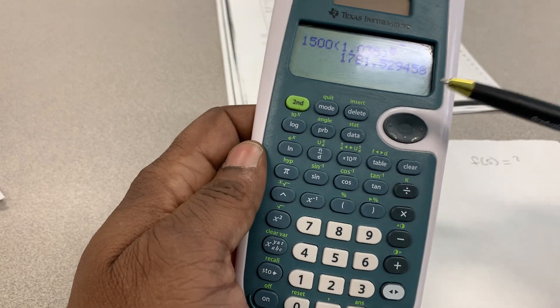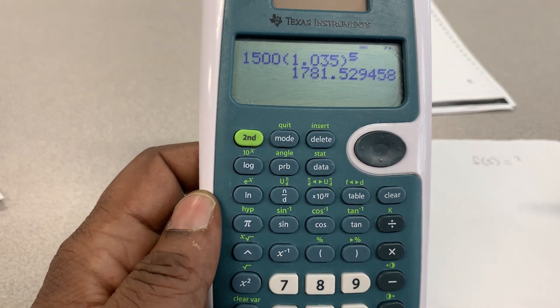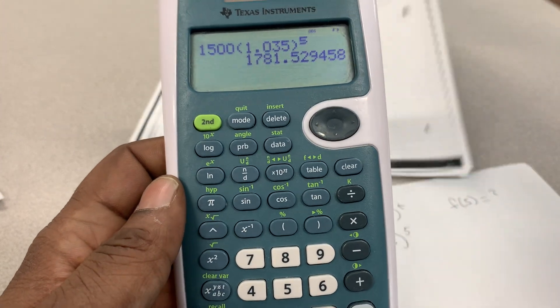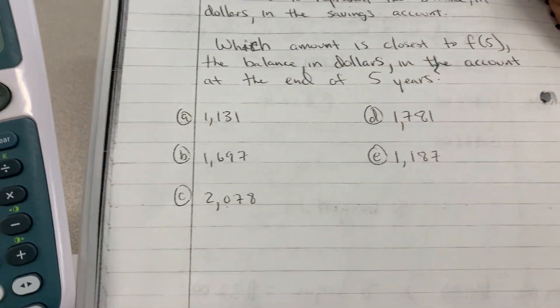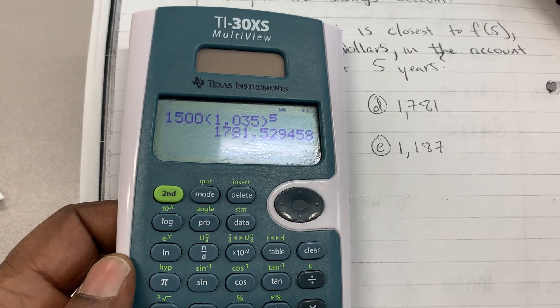And you can see what it gives me. It gives me $1,781.52 and some extra decimals there. So when you look at your possible answers on the test, the closest one is D, 1781.